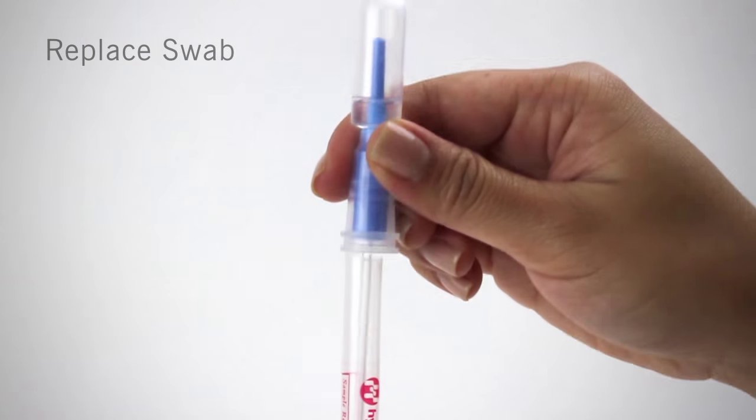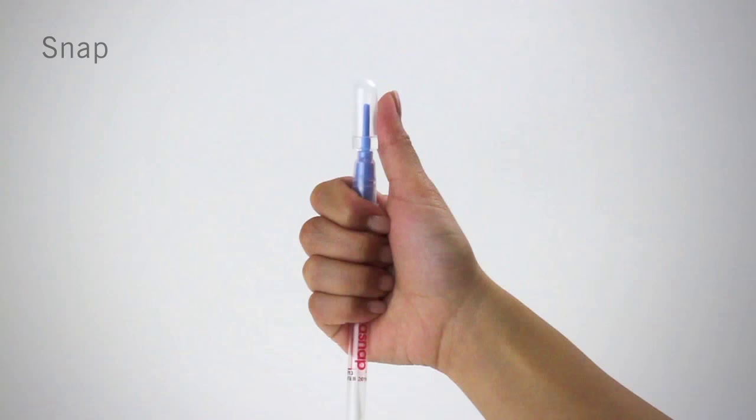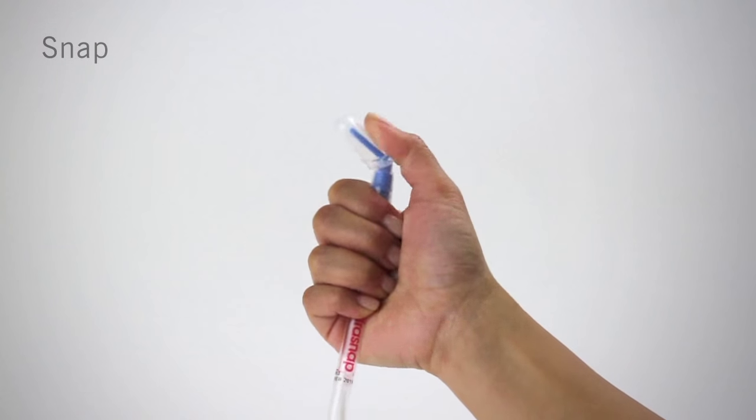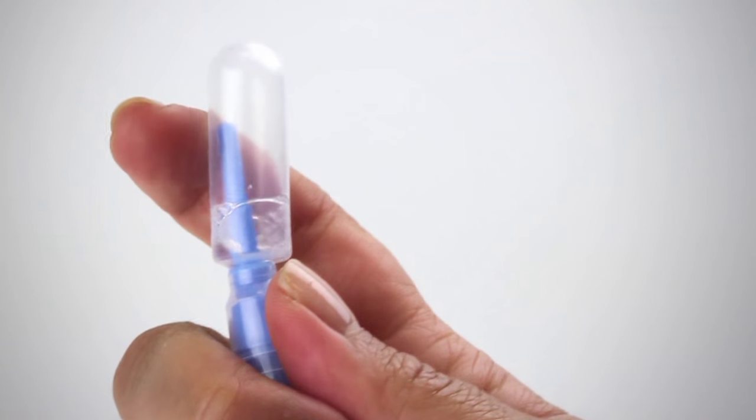Replace the swab in the tube. The easiest way to activate UltraSnap is to hold the device in your fist and use the thumb and forefinger to break the snap valve by bending the bulb forward and backward.